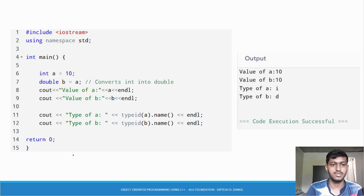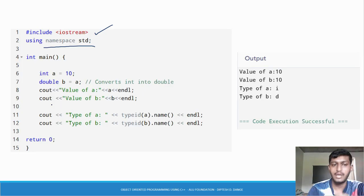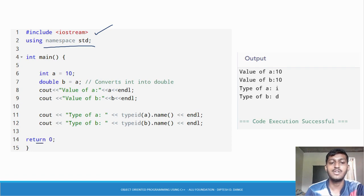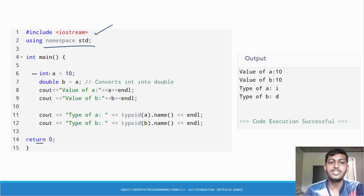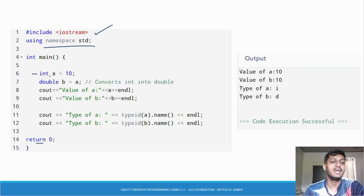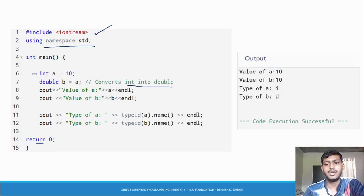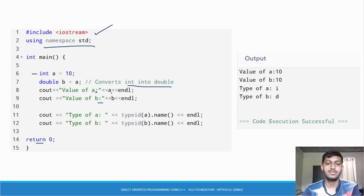Looking at the code: I included iostream, used 'using namespace std' for cout and cin, declared the main function with integer return type. I declared integer variable 'a' equal to 10, then declared double variable 'b' and assigned 'a' to it — converting integer to double. Then I printed the value of 'a' and the value of 'b' using cout with endl for new lines.